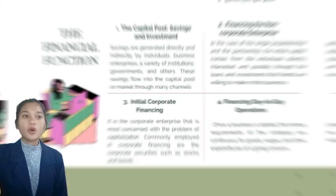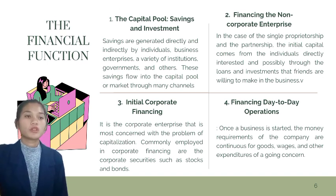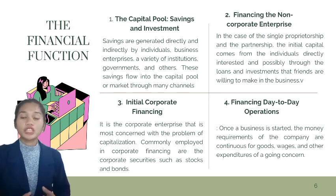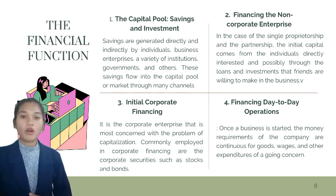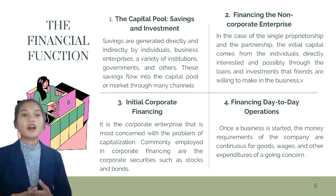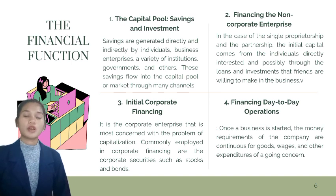The treasurer advises on the various means whereby the company could raise funds or borrow money. There are similar factors that affect the need for working capital. The first is the capital pool, or saving and investment. Savings are generated directly and indirectly by individuals, businesses, enterprises, institutions, governments, and others. This saving flows into the capital pool or market through many channels. The market is a network of many institutions, channels, and processes, distinguished by the different areas it covers and the types of loans it makes.